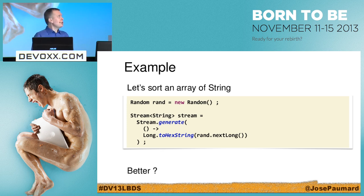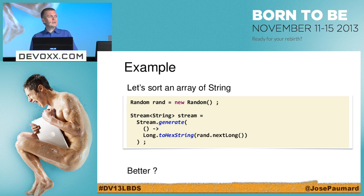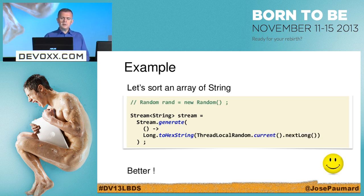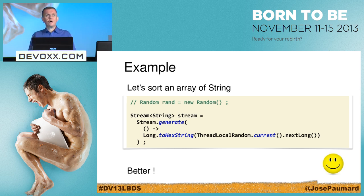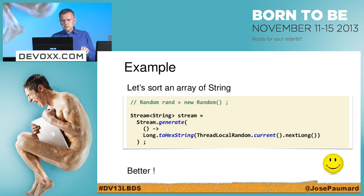Can I do it better? Yes. If I want to go parallel with this code, I shouldn't be using Random directly, because the seed is an AtomicLong — a contention point in multi-threaded code. Instead I should use ThreadLocalRandom.current().nextLong(). This is a nice pattern — I prefer it over the previous one.